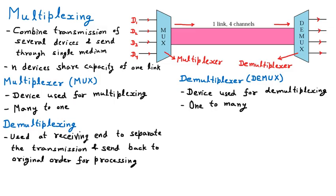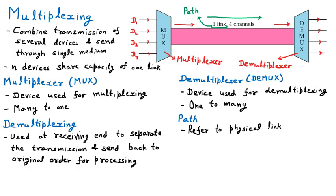The next concept is the path. The data of different devices is merged to the MUX and sent through a single pipe. This pipe through which the data moves is called the path. There is one link, and this one link is the path — a single path through which the whole data is transmitting. The path refers to the physical link through which the combined data moves.